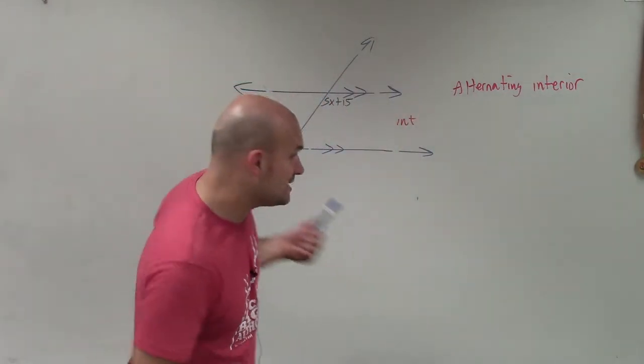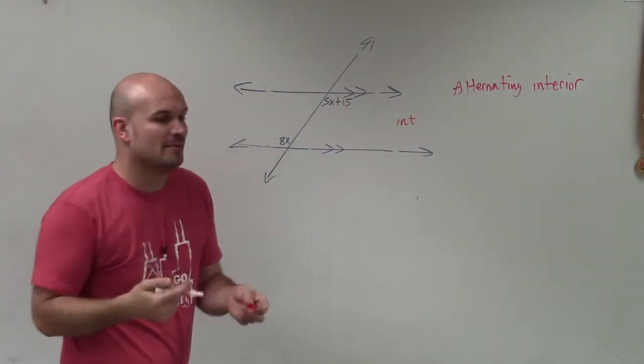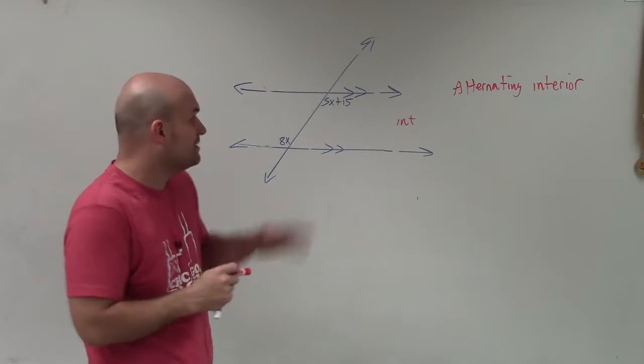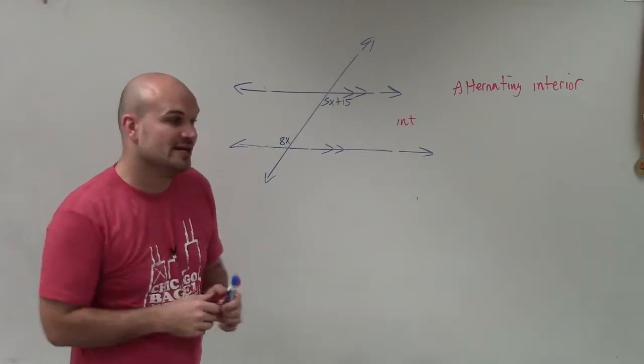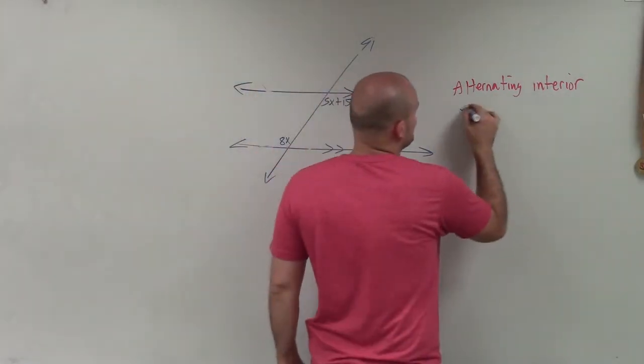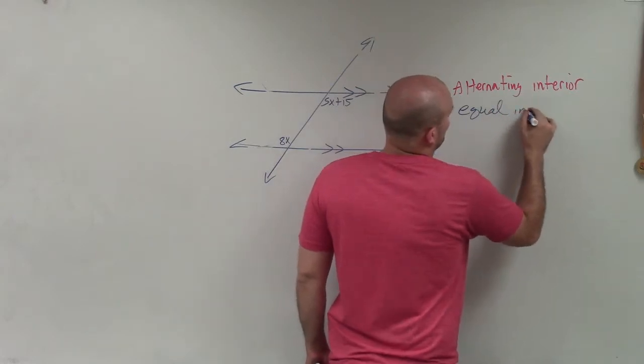Now, alternate interior angles, we need to be able to say, remember, how do they relate to each other when we have parallel lines? Well, alternate interior angles are equal in measure.